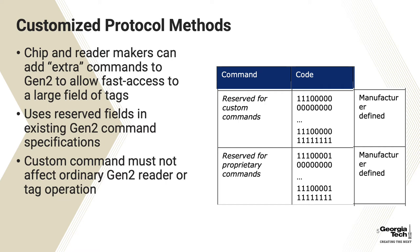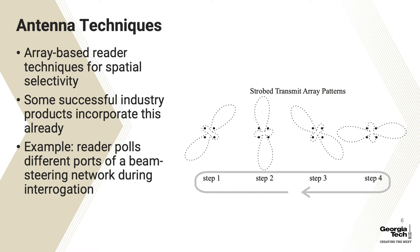Another technique is to use custom protocol methods. Even the Gen 2 standard, with its numerous commands, allows for some custom commands such that readers and specially fabricated tags can have protocol-level techniques for rapidly acquiring and singulating them. This can be used in combination with many other physical techniques discussed here. There are also antenna techniques — you can use array-based readers, and there are products on the market that do this. Using an array to exclude and localize a field of tags reduces the number of tags that will respond to a reader, helping you singulate them faster and work through a large field of tags quickly.